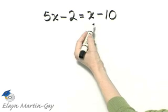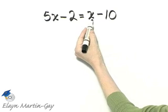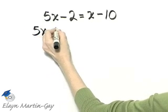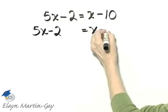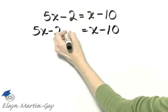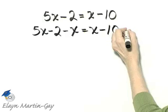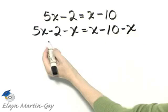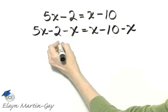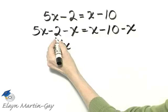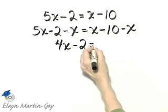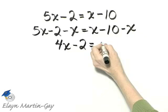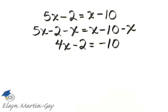So I'll begin by subtracting x from both sides. Notice what's happening. Here's my original equation, and I'm leaving myself a little room. I will subtract x on the left side, then I must subtract x on the right side. On the left side, 5x minus x is 4x minus 2 is equal to, and notice the x's subtract out on the right side just like I want, equal to negative 10.